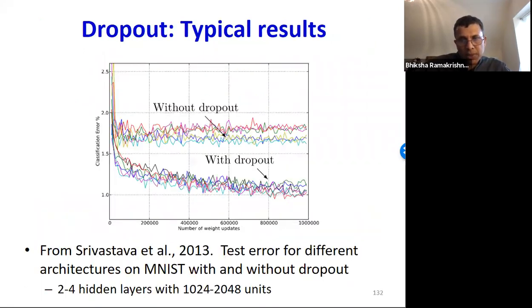Here are some typical results comparing models with and without dropout published by Nitish Srivastava in 2012-13. The x-axis here shows training iterations. The y-axis shows classification error on MNIST data. As you can see, including dropout in the training results in large reductions of error in this model. This is the error they got without dropout. This is what they get with dropout.